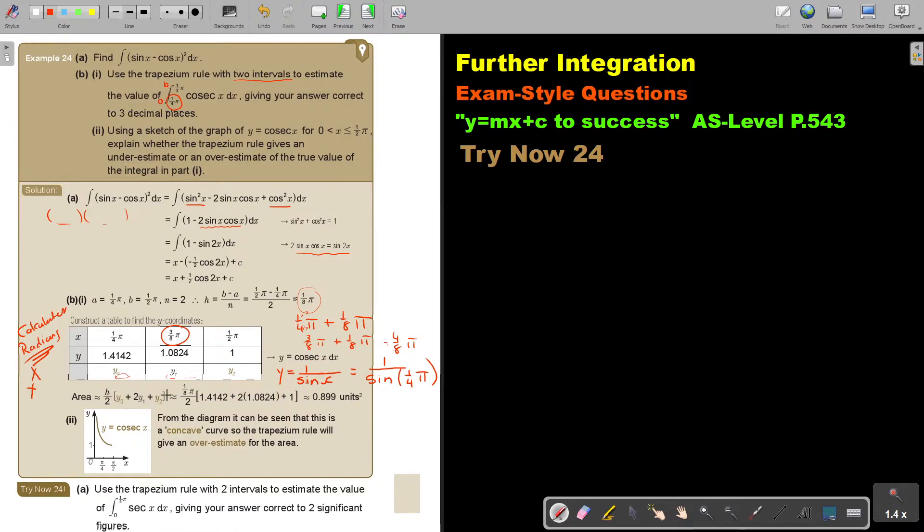And then this is my trapezium rule. H over 2. What is H? It's that, and then, remember, double the middle one, and then I just press this on the calculator. Multiply this, and I get, remember, to 3 decimal places. Okay, the next one.